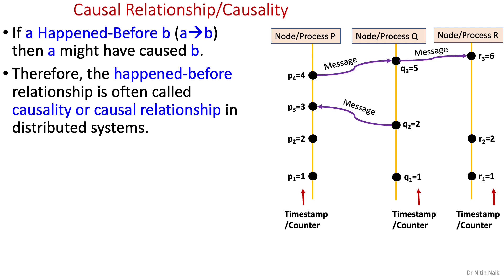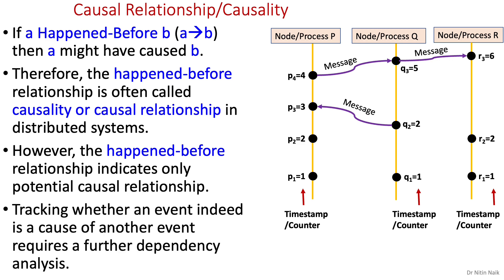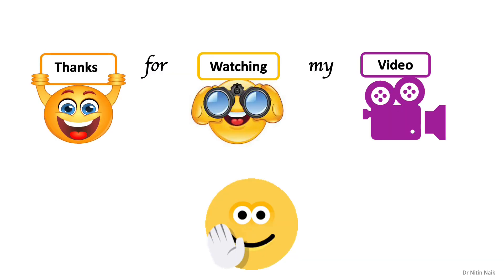The logical time is sufficient to capture the fundamental monotonicity property associated with causality in distributed systems. If A happened before B, then A might have caused B. Therefore, the happened-before relationship is often called causality or causal relationship in distributed systems. However, the happened-before relationship indicates only potential causal relationship. Tracking whether an event indeed is a cause of another event requires further dependency analysis. This concludes my presentation — thanks for watching.